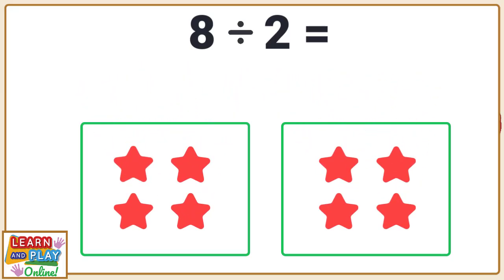You can see that after dividing the eight stars into two groups, there are now four stars in each group.